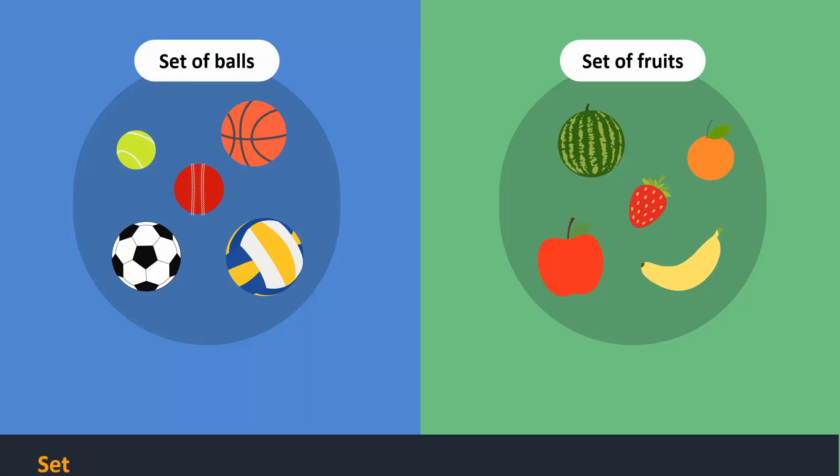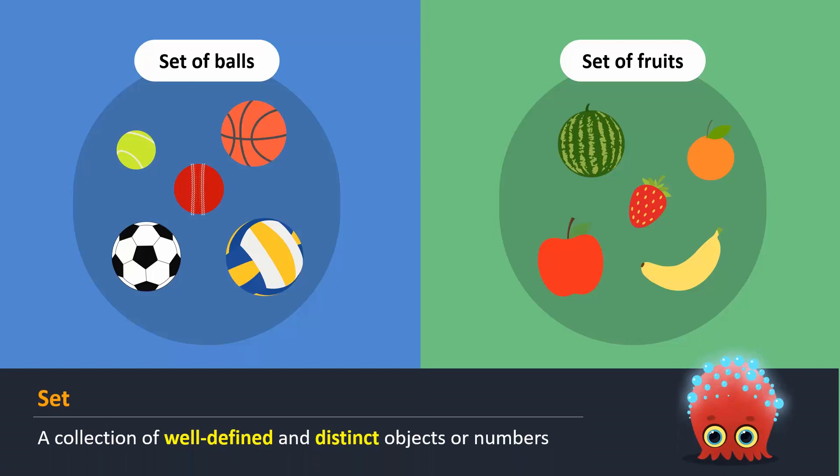A set is a collection of well-defined and distinct objects or numbers. There are two key properties in the definition. First, objects in a set must be well-defined. This means each object must have some specific properties that make it belong to the set.